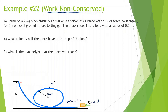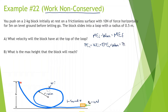With problems involving work non-conserved, we want to write everything out: mechanical energy initial plus work non-conserved equals mechanical energy final. So that's potential energy initial plus kinetic energy initial plus elastic potential energy initial plus work non-conserved equals potential energy final plus kinetic energy final plus elastic potential energy final.